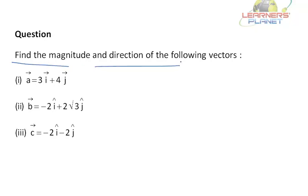Find the magnitude and direction of the following vectors. Now these vectors are represented in two dimensions, which is in i cap and j cap direction, that is along the x axis and the y axis. And this is a way of representing a vector in rectangular component form.